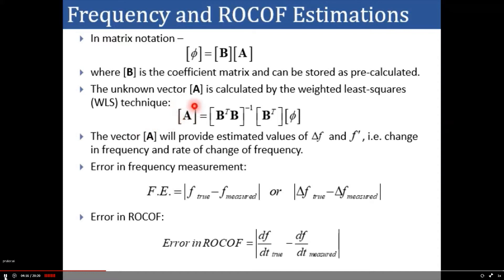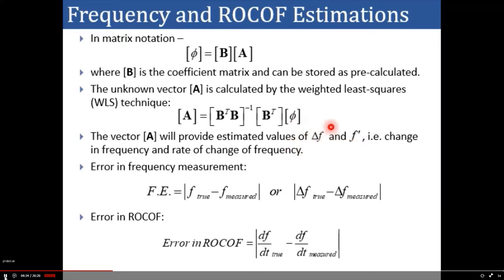After obtaining the value of a, you can simply calculate the values of delta f and f dash, because delta f = a1 / (2*pi) and f dash = a2 / pi. In this way, you can find the value of frequency change and rate of change of frequency.